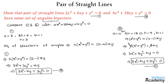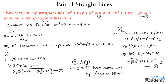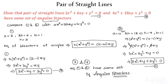Let us name this as equation 4. By comparing equations 3 and 4, we can say that equation 1 and equation 2 have the same set of angular bisectors. Remember the formula: the equation of bisectors of angles is h(x² + y²) = (a − b)xy. Hope you understood the concept. Refer to more videos on this topic on our channel. Thanks for watching. Have a nice day.